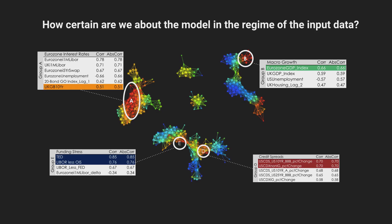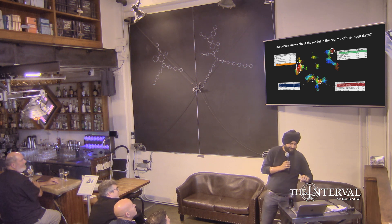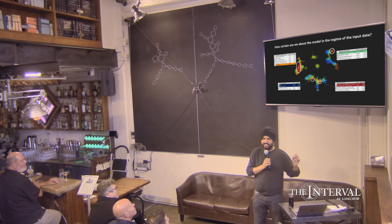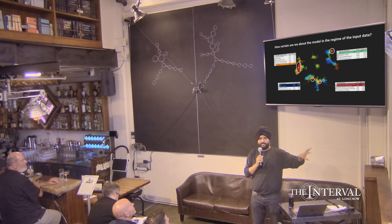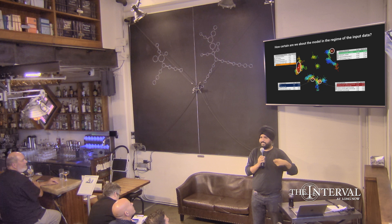The third is how certain are we about the model in the input regime of the data. So we've created a model, and so this case, this is a financial stress test model, and we want to figure out which variables are the most important. I'm just speeding up a little bit, just looking at the time here, so I'll go quickly through this. But again, the case here is that for every time you get an input to the model, you can place it on the model that you created in the back end, this topological map, and you can figure out is it a region of high certainty or not.